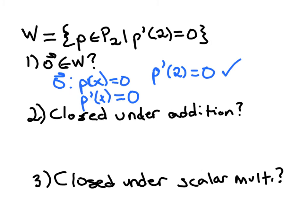Is it closed under addition? So here, we need to take two generic polynomials from W, and you cannot pick a specific polynomial.